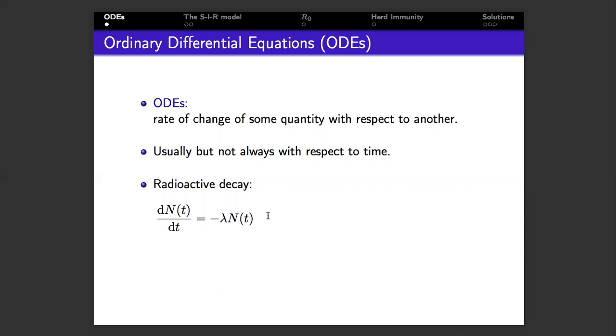Shown on the slide is the ordinary differential equation for radioactive nuclear decay. So let N be the number of radioactive nuclei in a sample of material. d by dt on the left-hand side means the rate of change with respect to time. So what this equation tells us is that the rate of change of the number of nuclei in the sample is equal to the number in the sample itself multiplied by minus lambda. Lambda is just some number which determines the half-life of the material.